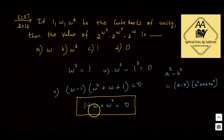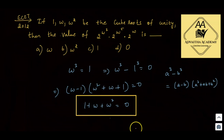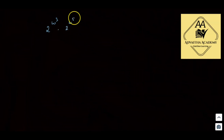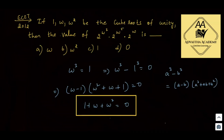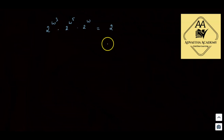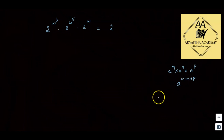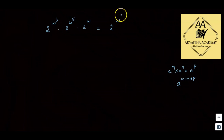Now looking at the question: 2^(omega cubed) times 2^(omega to the power 5) times 2^(omega). Since the base is the same (2, 2, 2), we can add the powers. So this becomes 2^(omega cubed plus omega to the power 5 plus omega).